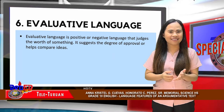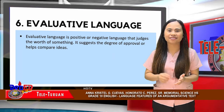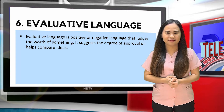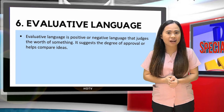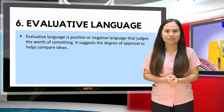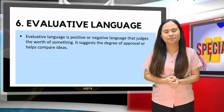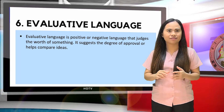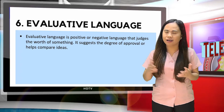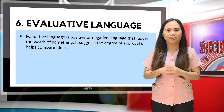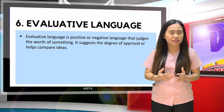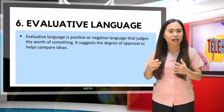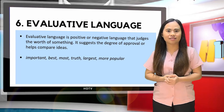We are back here for Week 3. The sixth language feature of exposition is evaluative language. Evaluative language is a positive or negative language that judges the breadth of something. It suggests the degree of approval or helps compare ideas.